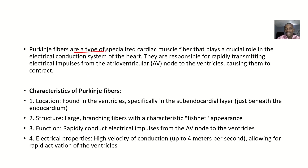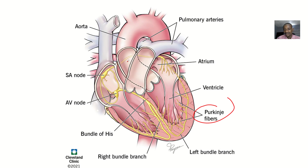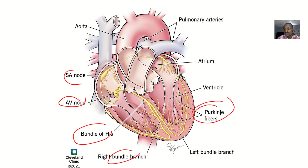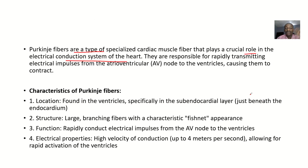Purkinje fibers are a type of specialized cardiac muscle fiber. They play a role in the electrical conduction system of the heart. The SA node passes impulses to the AV node, the AV node passes impulses to the bundle of His, the bundle of His passes impulses to the bundle branches, and the bundle branches pass impulses to the Purkinje fibers, which finally spread it to the muscles. They are responsible for rapidly transmitting electrical impulses from the atrioventricular node to the ventricles, causing them to contract.